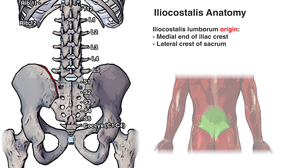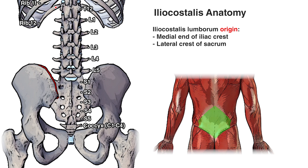Additionally, the iliocostalis lumborum also originates from the thoracolumbar fascia, which I've highlighted in green on screen. The thoracolumbar fascia is a broad, dense sheet of connective tissue located in the back of the trunk, situated between the muscles of the back and the deep muscles of the abdomen.